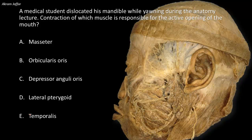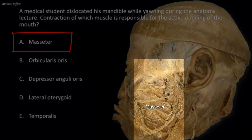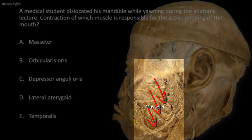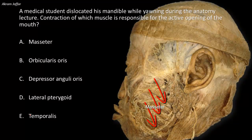Let's start with the first option: masseter. Masseter arises from the zygomatic arch, and its fibers slope obliquely to be inserted into the angle of the mandible. As might be expected from its attachment, masseter acts to close the jaws by elevating the mandible, and thus it does not participate in mouth opening — so this option is wrong.